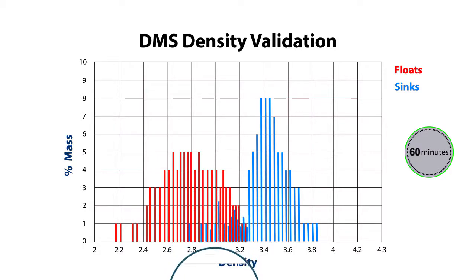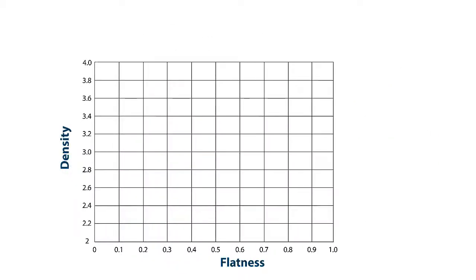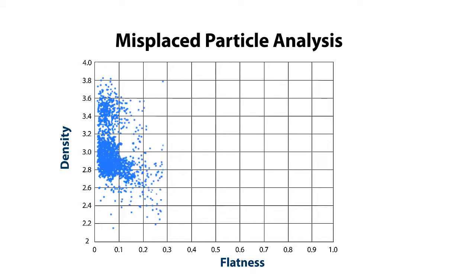The cut-point efficiency of a separation process can be determined in a short space of time, and treatment of a representative sink or float sample can be completed in as little as 60 minutes. The influence of shape on the performance of the DMS process can be extracted from analysis of the originally captured data.